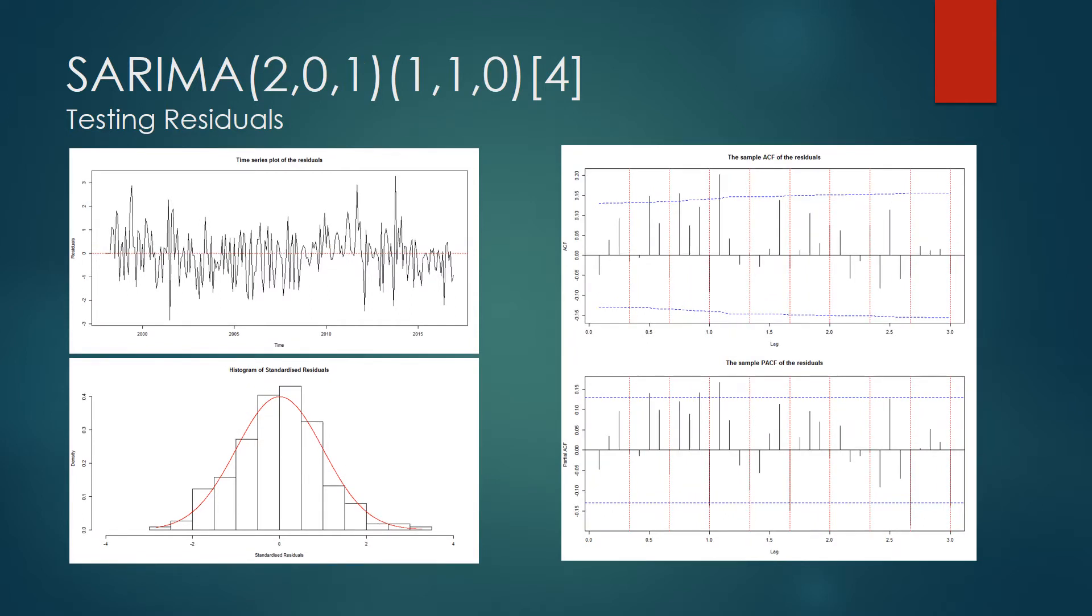The Shapiro-Wilk normality test p-value of this model is 0.2105, and the Ljung-Box test p-value is 0.2384, so the residuals may be assumed to be normally distributed and uncorrelated. The distribution appears normal, and the ACF and PACF plots show few significant lags.